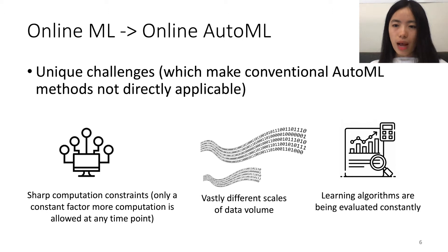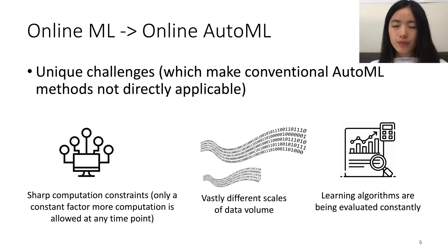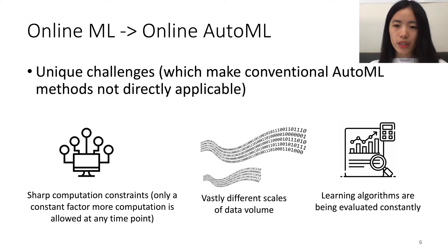And finally, the learning algorithms are being evaluated constantly, which is obviously not the case in a typical offline learning setting, where people can just use the final performance on a test dataset to assess the quality of the hyperparameter. This online performance evaluation brings very critical new challenges to Online AutoML, because it means that in addition to the computation price of the tuning, we also need to pay for the learning price of the tuning process.